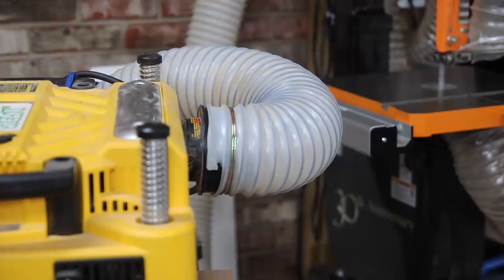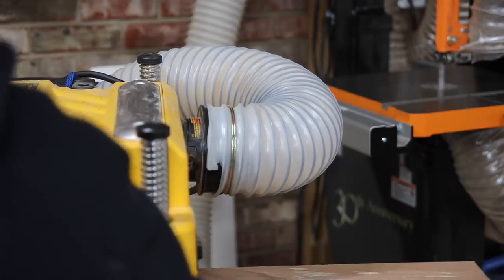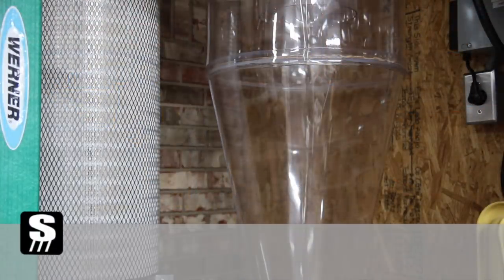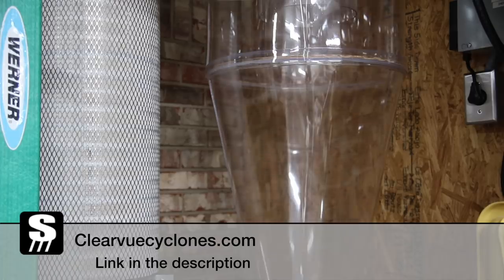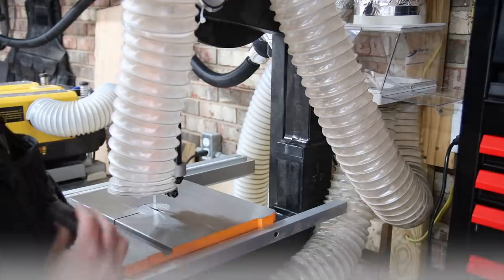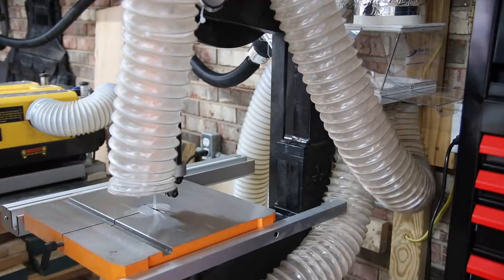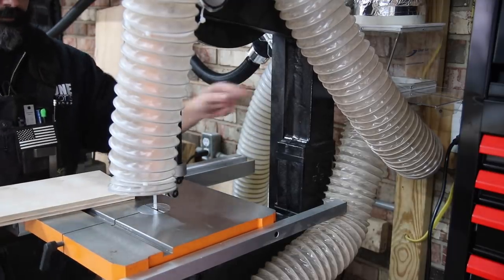As you're watching some of these test cuts being made, and I'm going to be doing this at all of my tools so you'll be able to see the results as they happen. The cyclone that I'm using is made by Clearview Cyclones, the CV1800. I'll leave a link down in the description. I'm upgrading from a Harbor Freight unit to this cyclone, and man, what a difference.